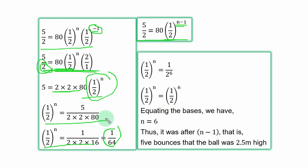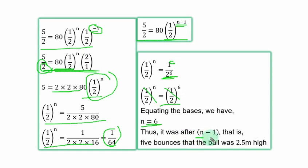Express 1/64 with base 1/2: since 64 equals 2⁶, we have (1/2)⁶. Equating the bases gives n equal to 6. However, the ball was 2.5 meters high after n minus 1 equals 5 bounces — because in a GP the count always decreases by 1, so the answer is 5 bounces.